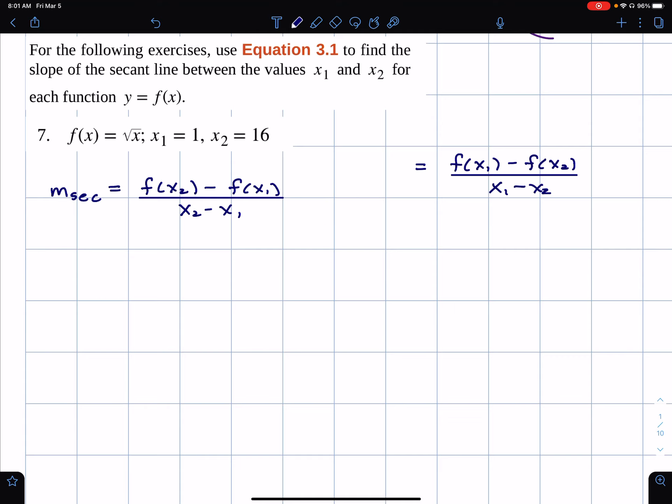And in this case, x2 apparently is 16, x1 is 1, and then I'll write 16 minus 1 in the denominator.